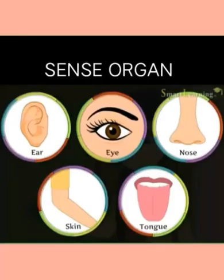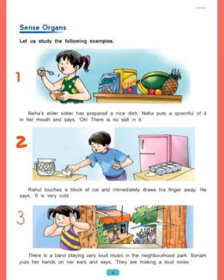Our next topic is sense organs. We have five sense organs: ear, eye, nose, skin, and tongue. Now we will study sense organs with the help of some examples.